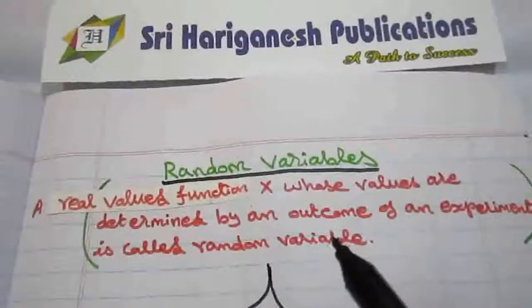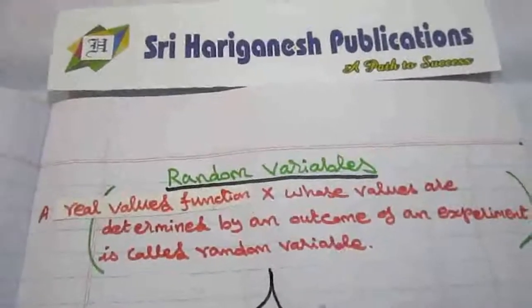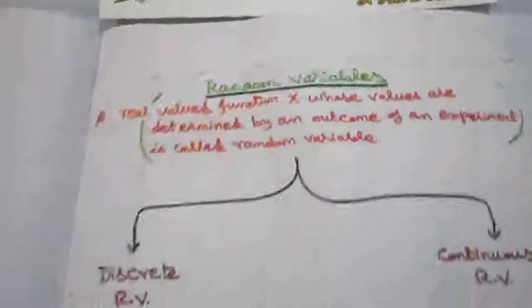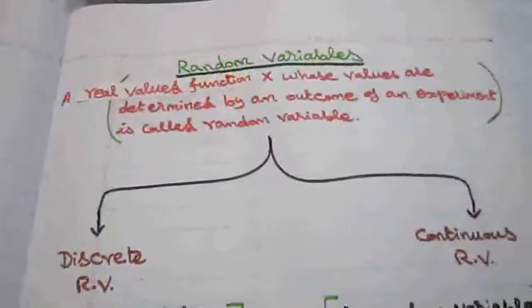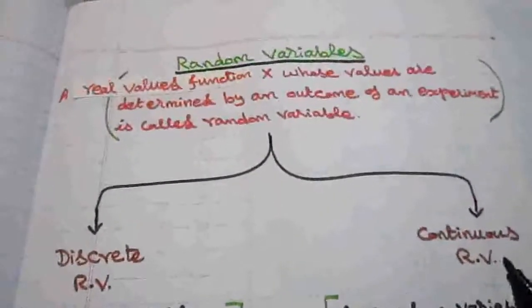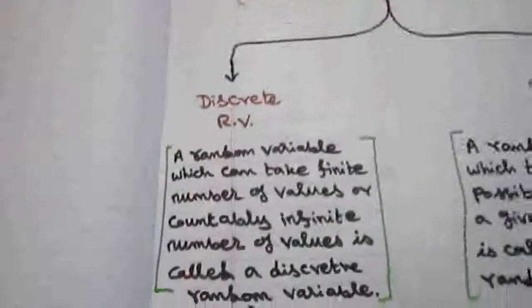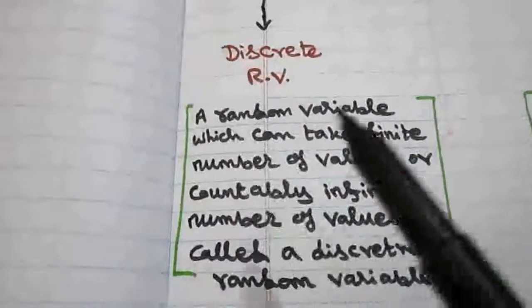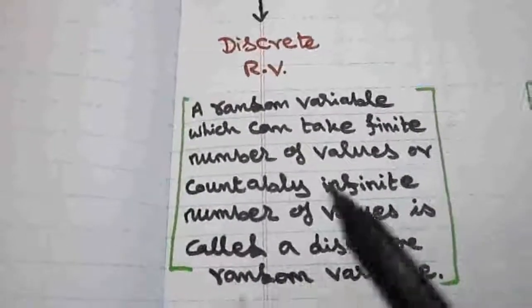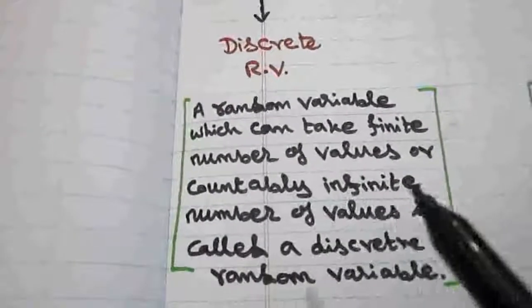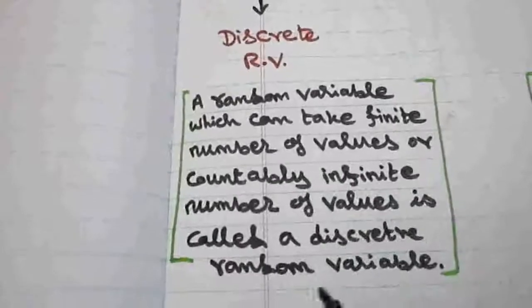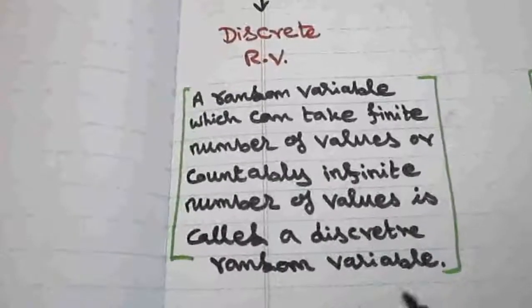A random variable can be divided into two parts. One is discrete random variable, another one is continuous random variable. A discrete random variable is one which can take a finite number of values or a countably infinite number of values.